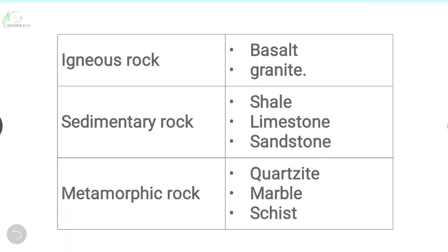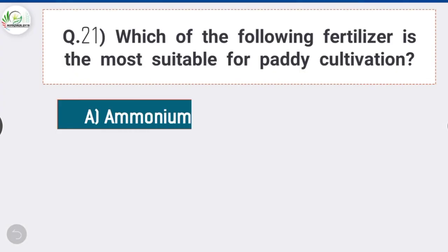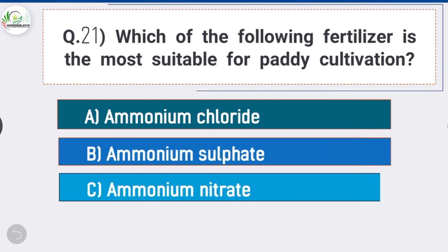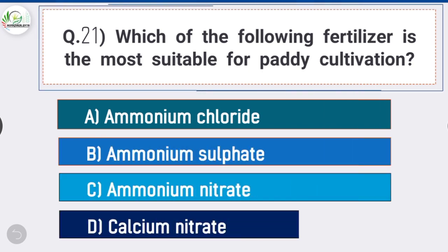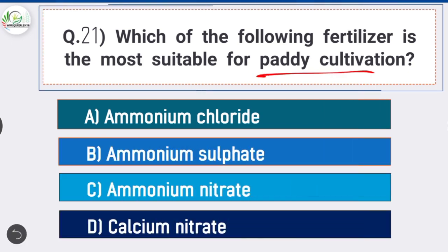Question number 21: Which of the following fertilizer is most suitable for paddy cultivation? Answer is option B, ammonium sulfate. Ammonium sulfate is most suitable for paddy cultivation.